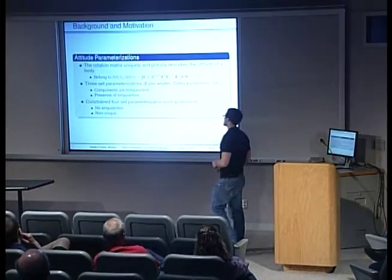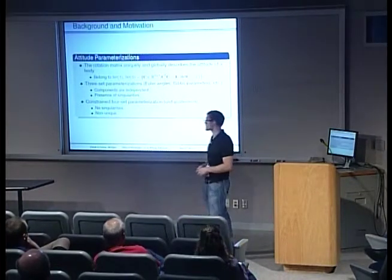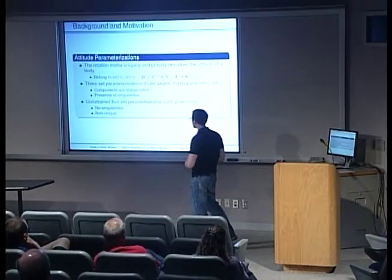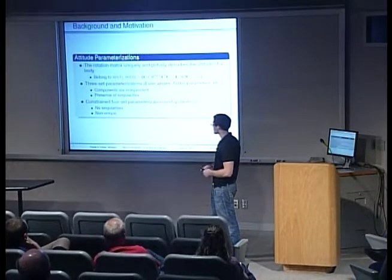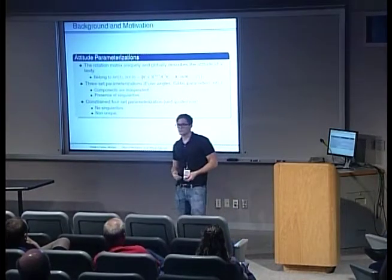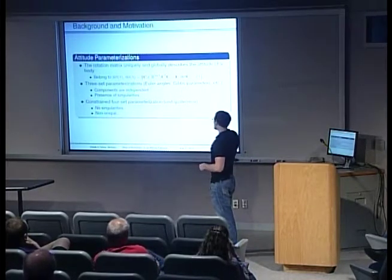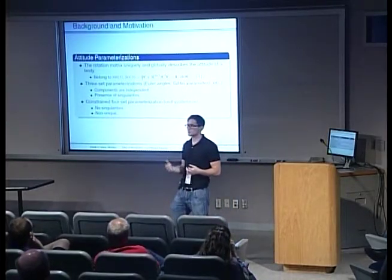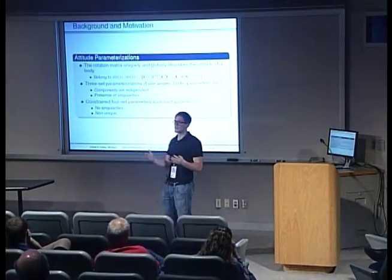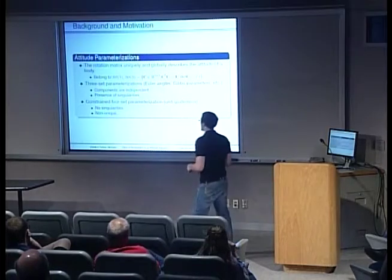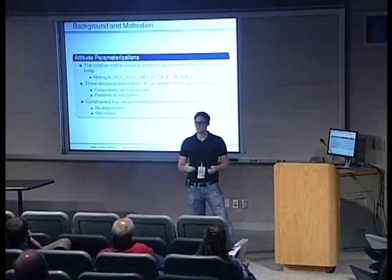All three-parameter parameterizations have independent components, but they have singularities where rotational kinematics can become undefined at certain points. Constrained four-parameter parameterizations have also been used, such as the unit quaternion. The unit quaternion is nice because it has no singularities; however, it's not unique — two quaternions define the same attitude — which can cause computational difficulties. To avoid these drawbacks, we can use the rotation matrix directly within the estimation algorithm. That's what I mean by an SO3-based attitude estimator: it evolves directly on the special orthogonal group and directly estimates the rotation matrix.